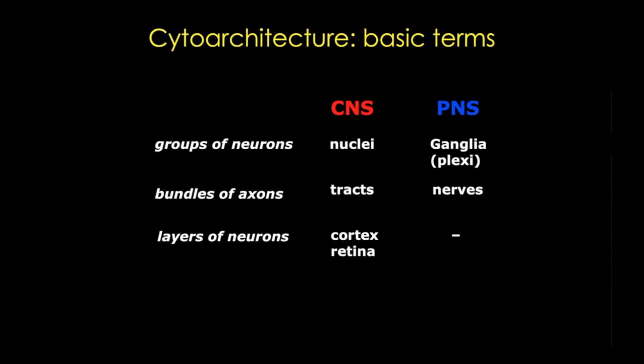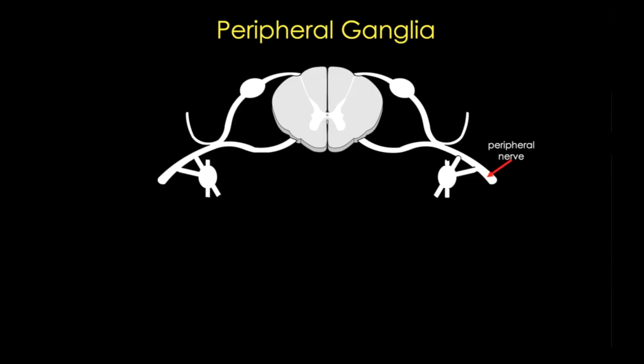Now we're going to look at some of the structures we can see with basic histological stains, and we'll start with the PNS and peripheral ganglia — those collections of neuronal cell bodies. Here in this cartoon of a cross-section of the spinal cord, I've labeled a peripheral nerve and a sympathetic ganglion, which is ventral and lateral to the spinal cord. This ganglion contains cell bodies of neurons that deliver information about stress and danger and are responsible for our familiar fight-or-flight response. This is a ganglion of the autonomic nervous system.